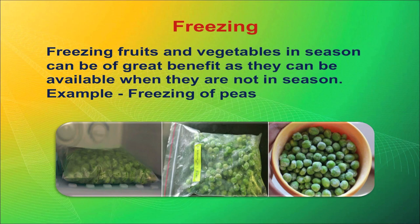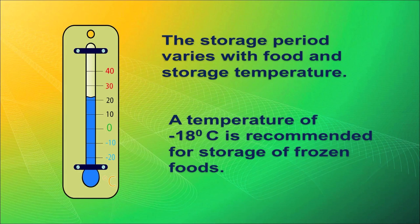Now I will talk about freezing. Vegetables preserved in season are of great benefit as they can be available when they are not in season — for example, freezing of peas. This picture shows how frozen peas can be stored in the household refrigerator's freezing compartment. As temperature grows high it invites microorganisms and can spoil the food. The storage temperature varies by food, and a temperature of minus 18°C is recommended for storage of frozen food — at this temperature foods can be stored for a very long time. Thank you.